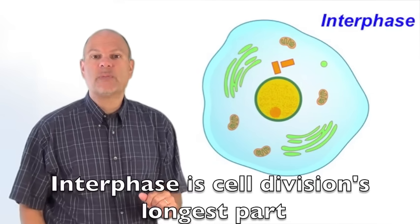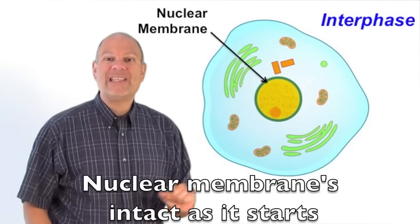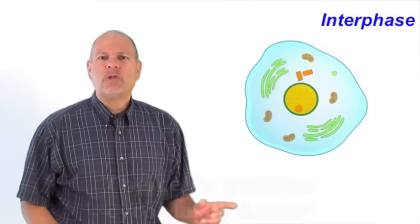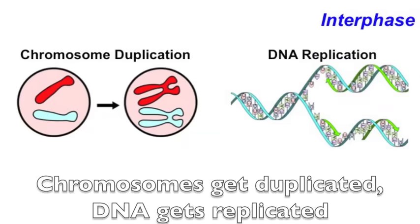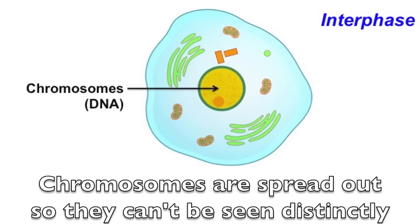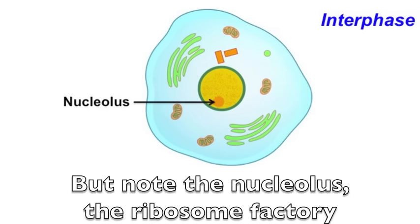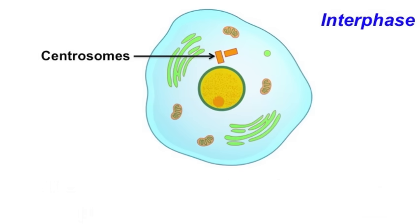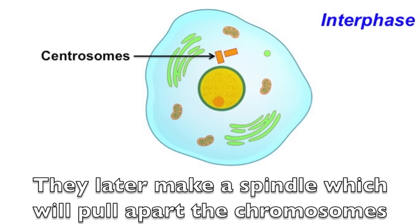Interphase of cell division's longest part, nuclear membrane's intact as it starts. The cell's growing, cytoplasm flowing, chromosomes get duplicated, DNA gets replicated, chromosomes are spread out so they can't be seen distinctly, but note the nucleolus, the ribosome factory outside the nucleus, the two centrosomes. They later make a spindle which will pull apart the chromosomes.